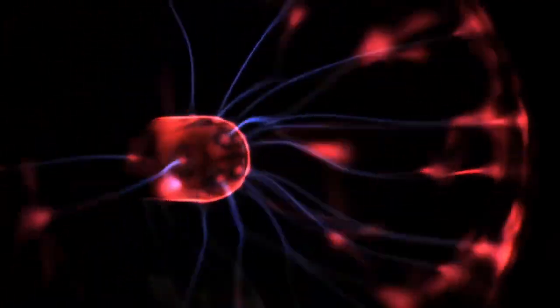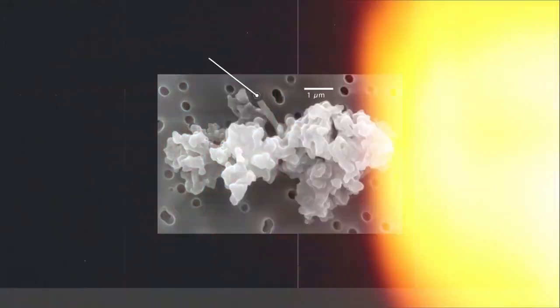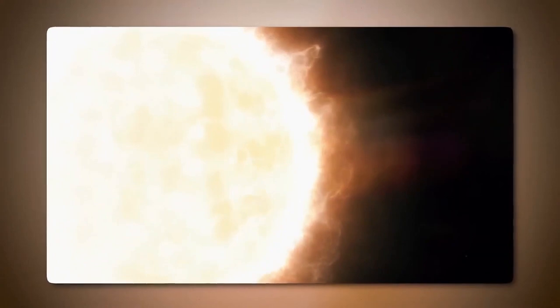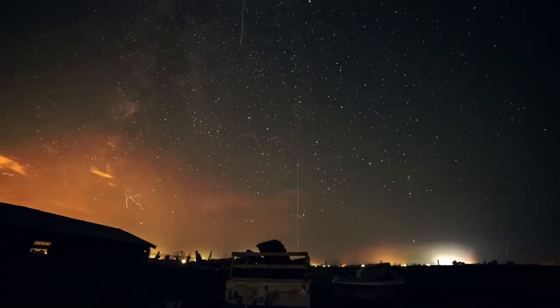The solar wind event likely energized Uranus's radiation belts, contributing to the unusually high levels of charged particles observed by Voyager 2. These findings may help explain why Uranus's radiation belts are second only to Jupiter's in intensity.